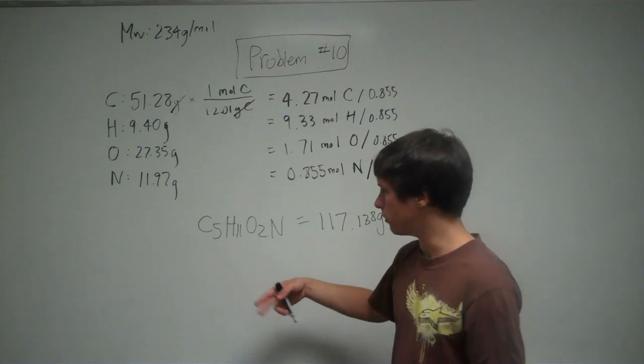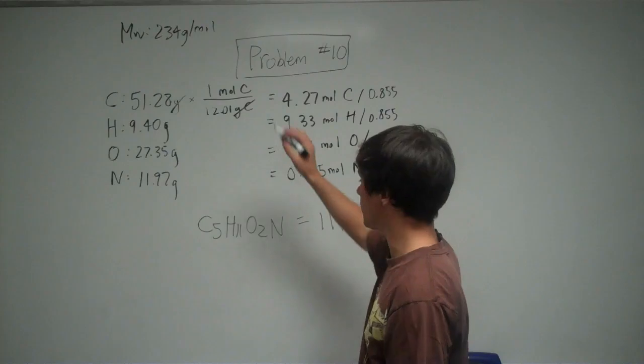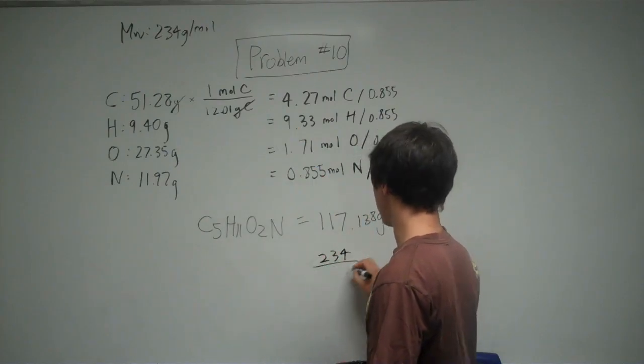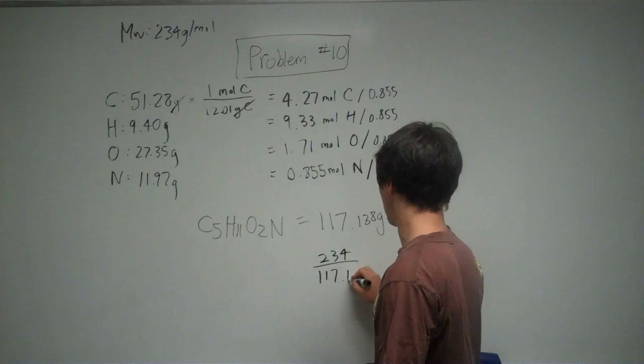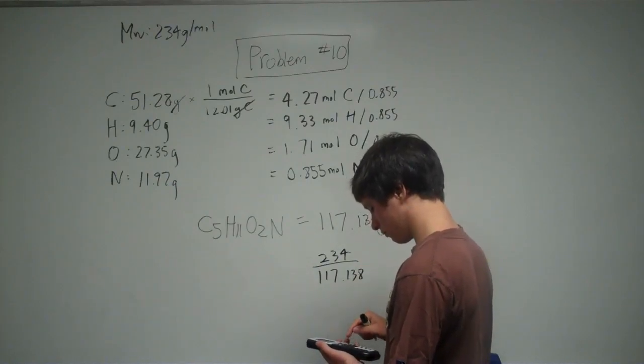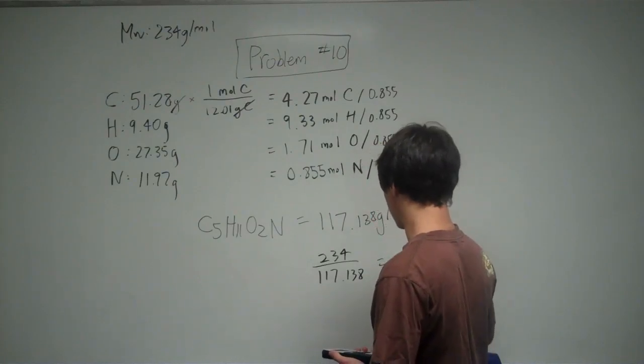But we can see what we have to multiply this by to get that mass. So what we do is we take that molar mass, it's 234 divided by 117.138. 234 divided by that is basically 2.